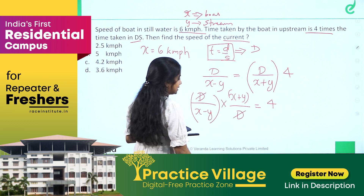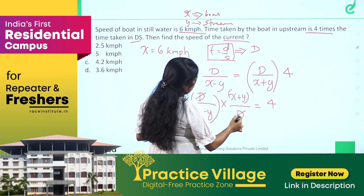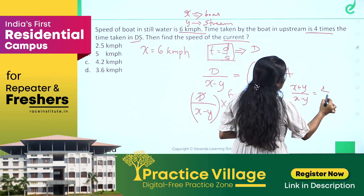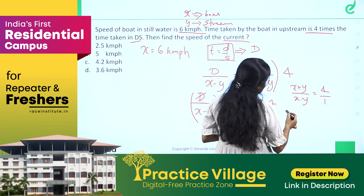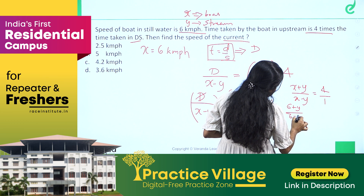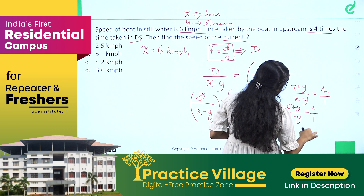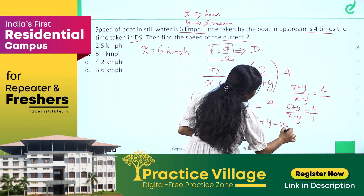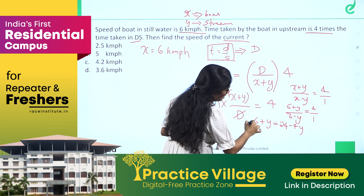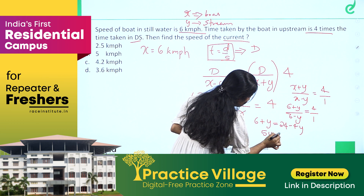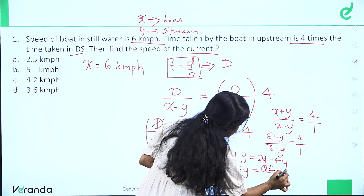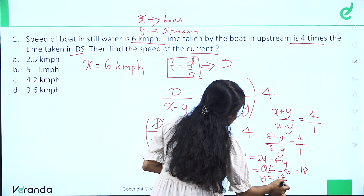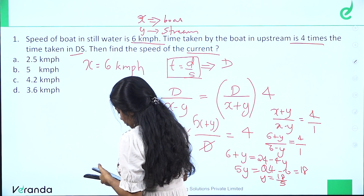Substituting x equals 6: we get (6 plus y) divided by (6 minus y) equals 4 by 1. So 6 plus y equals 24 minus 4y. Therefore 5y equals 18, giving y equals 18 by 5, which is 3.6 km per hour.